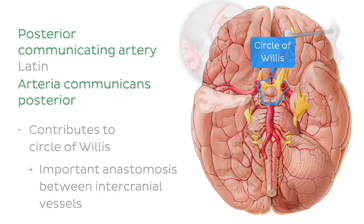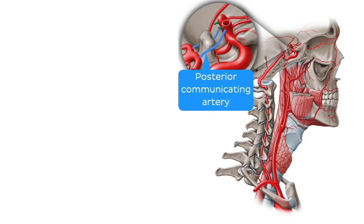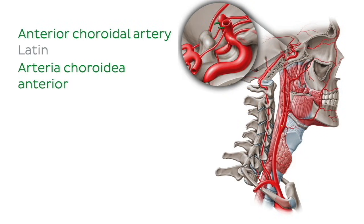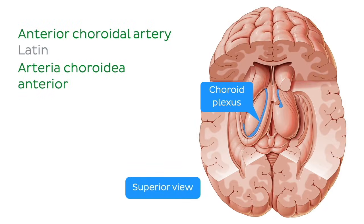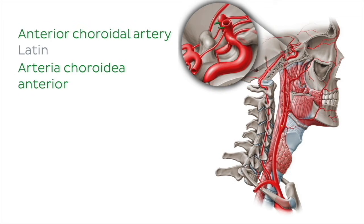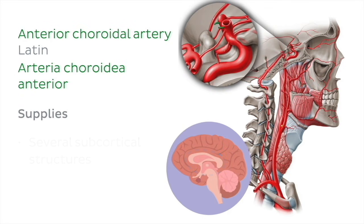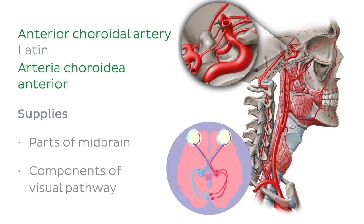Just superior to the posterior communicating artery is where the anterior choroidal artery originates. It travels backwards across the optic tract and terminates in the choroidal plexus. This artery supplies several subcortical structures, parts of the midbrain, and components of the visual pathway.